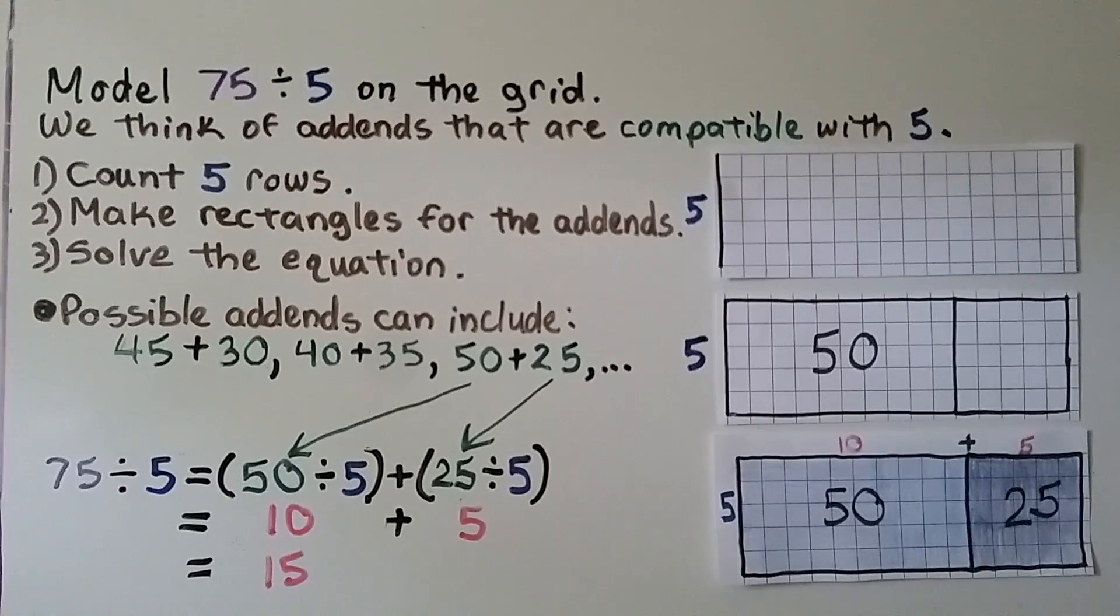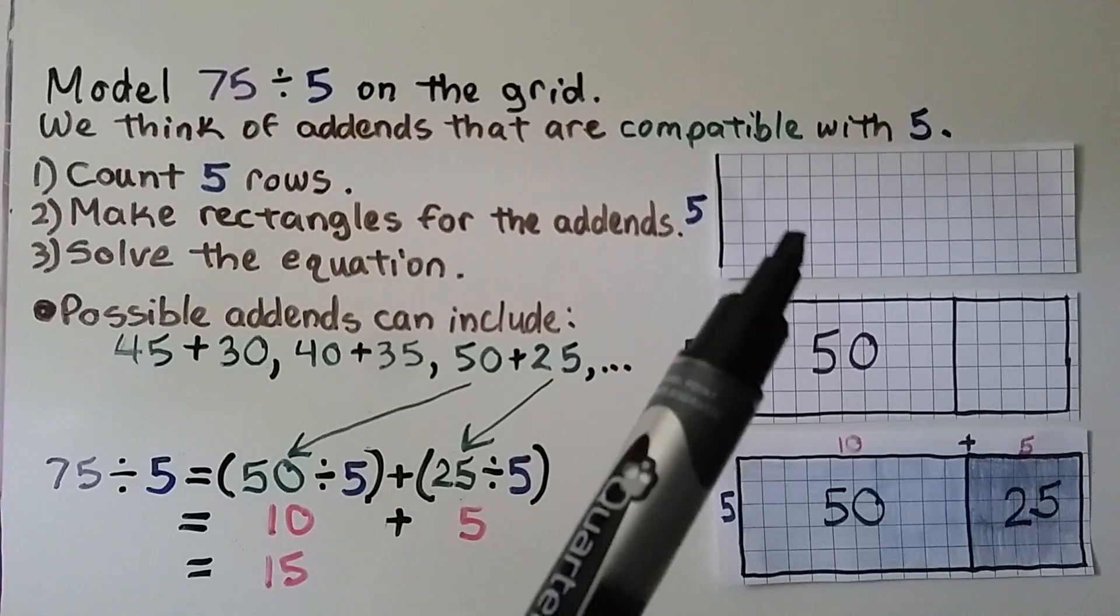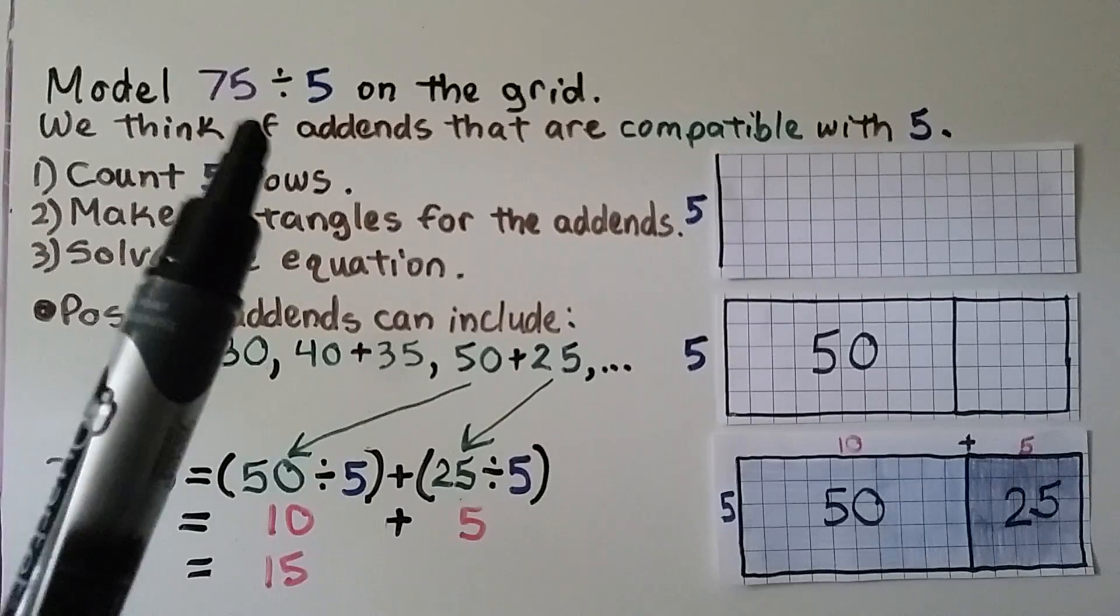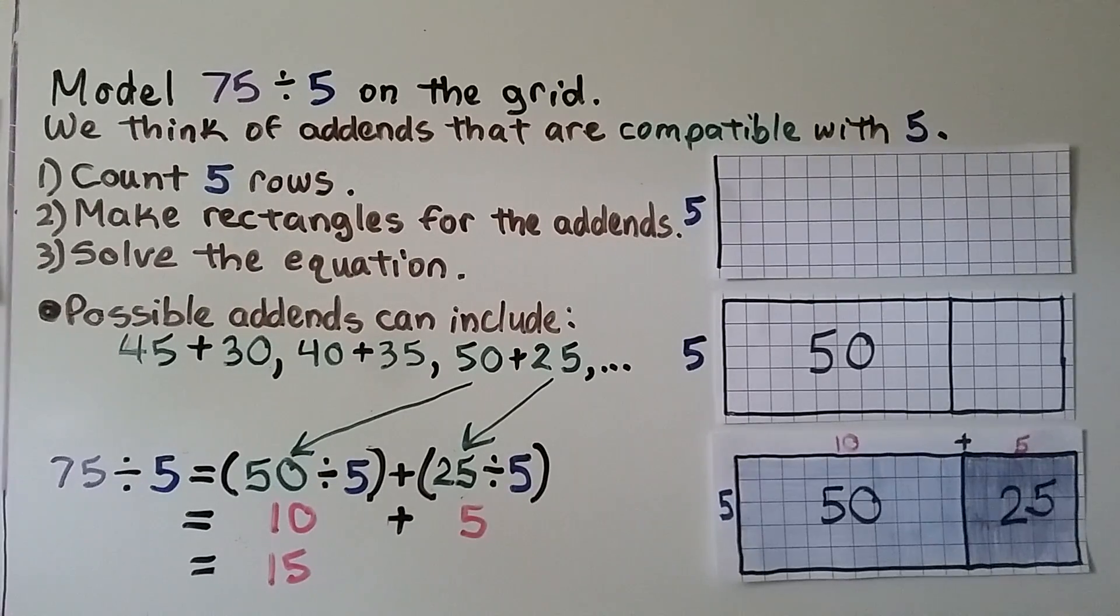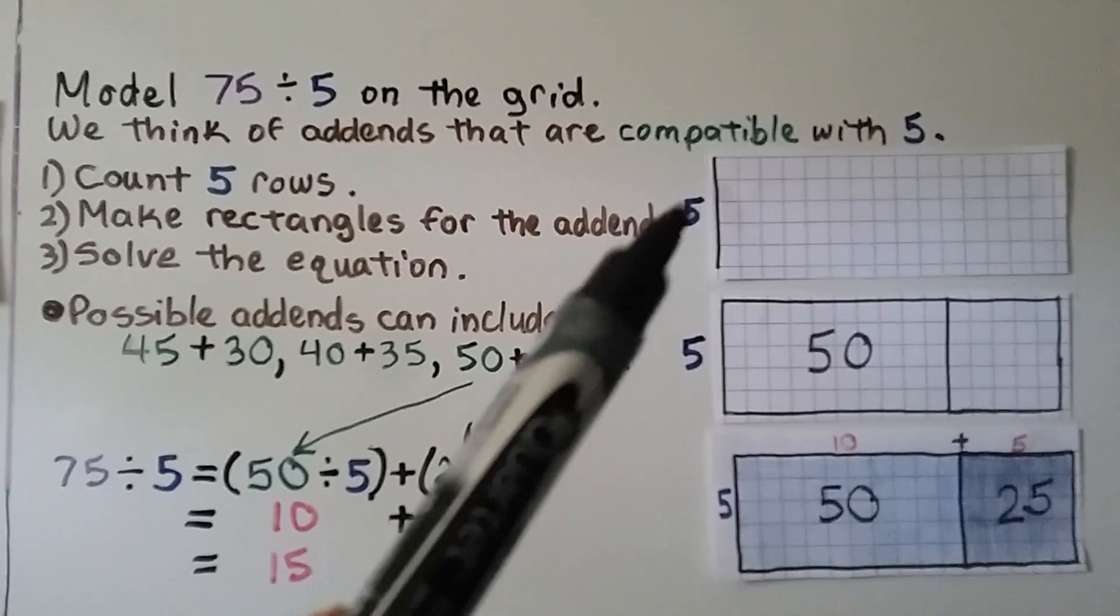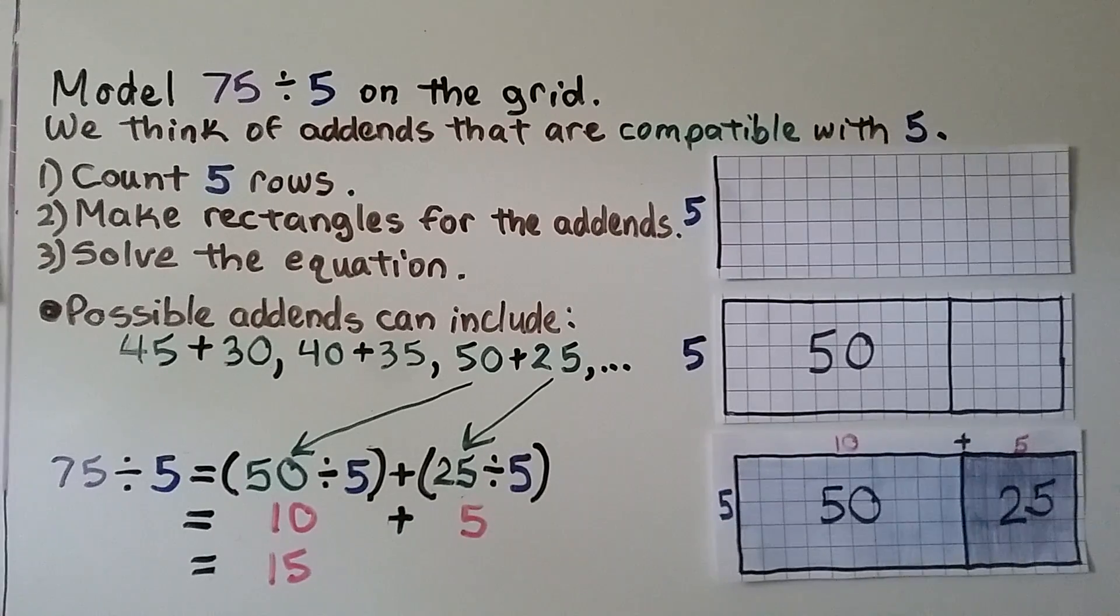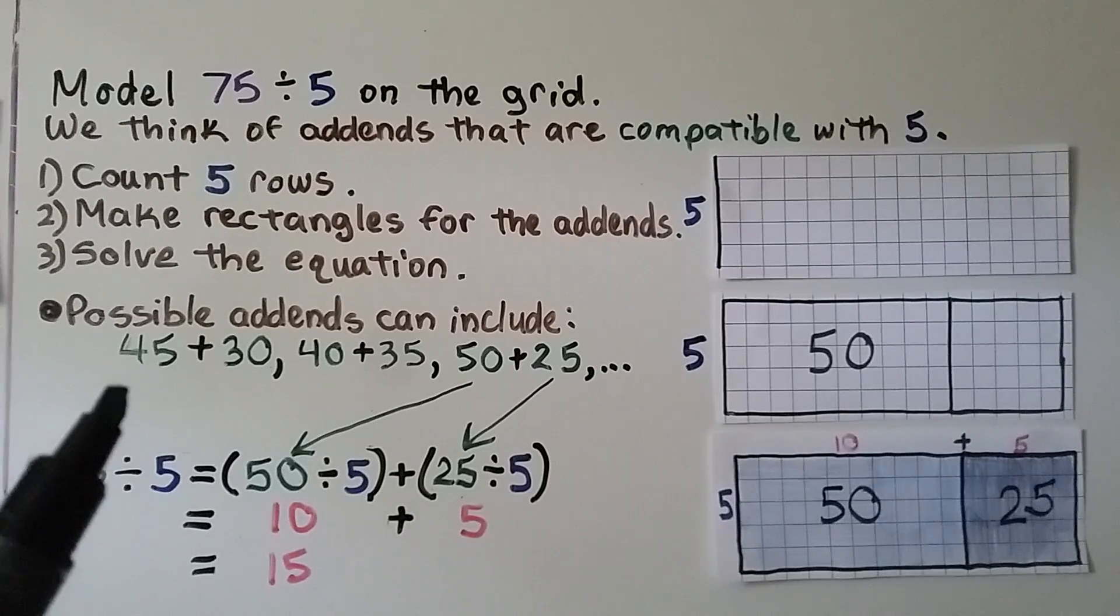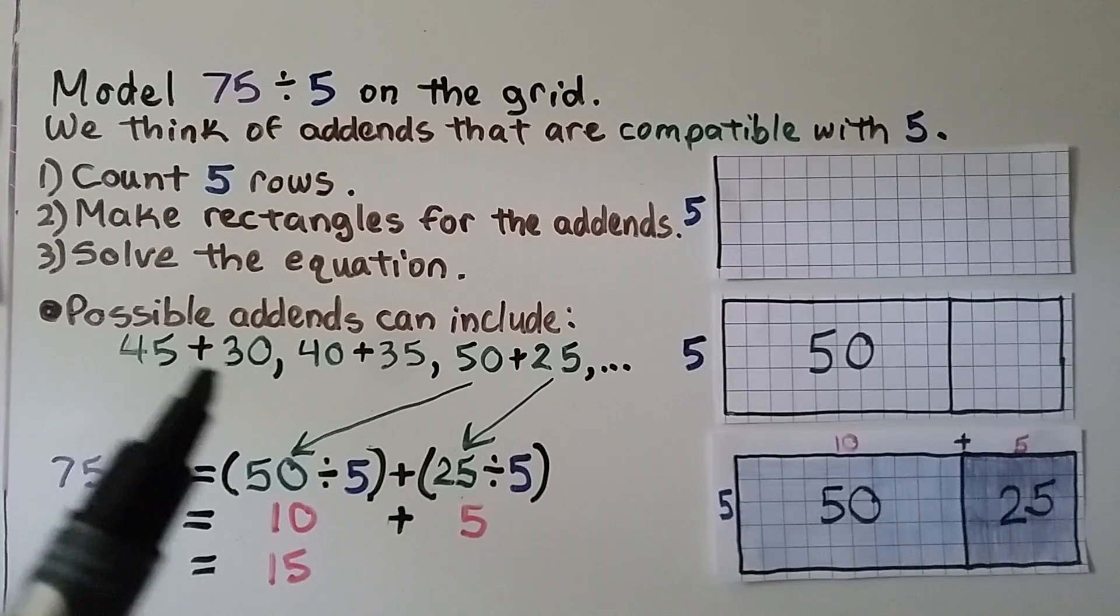Now it says model 75 divided by 5 on the grid. So if you have a blank grid, we can model this division equation. We think of addends that are compatible with 5. And we count 5 rows. That's going to be our divided by 5.